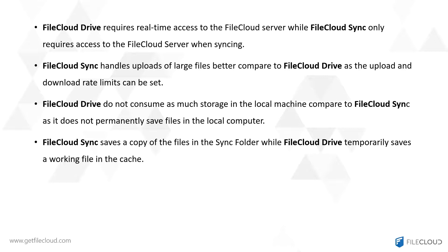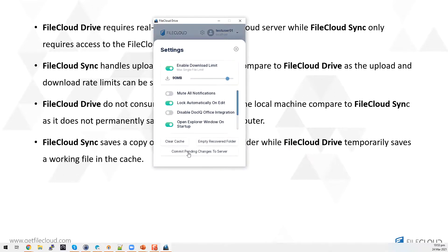With FileCloud Sync, uploading larger files to the server is handled better compared to FileCloud Drive, as upload and download rate limits can be set. FileCloud Drive does not consume as much storage on the local machine compared to FileCloud Sync, as it does not permanently save files locally — it saves a copy of the working file in cache, while FileCloud Sync saves a copy of the files in the sync folder. The cache can be cleared while logged in by going to settings and clicking the clear cache button.